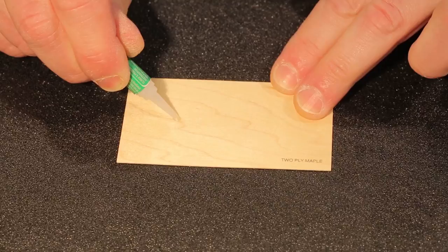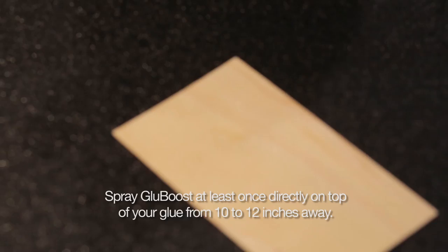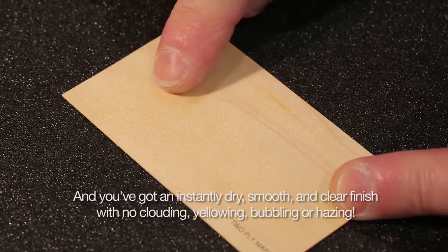Take a little bit of cyanoacrylate adhesive. Put it down. Take Glue Boost. Spray. It's dry and smooth. Instantaneously dry and smooth.